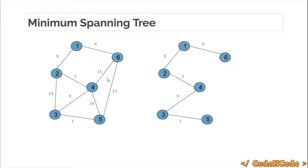What we have done is removed some of the edges such that the graph is still connected. A tree means a connected graph with no cycle. We now have a tree where the sum of the edges is 27. This is the MST because the sum of the edges is minimum.